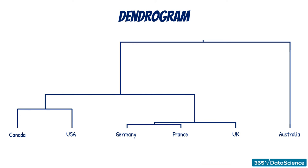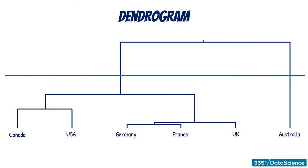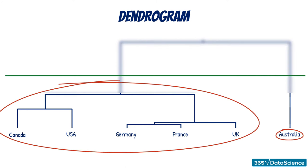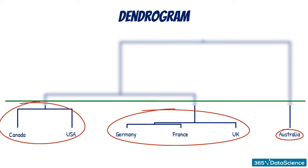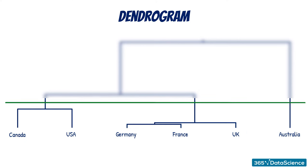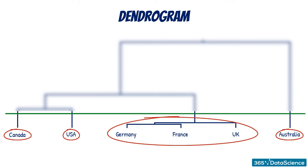Next on our list is the choice of number of clusters. If we draw a straight line piercing two links, we will be left with two clusters: Australia in one, and all the rest in the other. If we pierce them at a different level, we will get three clusters: North America, Europe, and Australia. The general rule is, when you draw a straight line, you count the number of links that have been broken. In this case, breaking three links leaves us with three clusters, because the links were coming out of those three clusters. Breaking the links at a higher level will give four clusters, and so on.